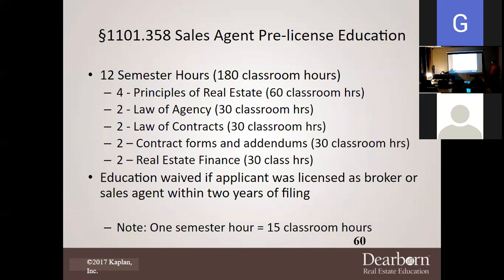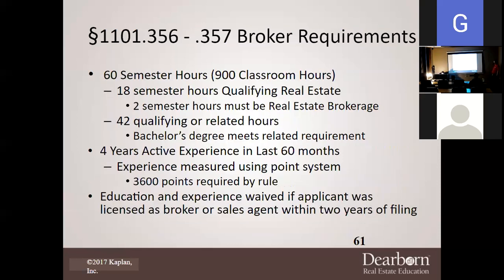These are the required courses you must take: a total of 180 hours. Those who have been with this program from day one have completed every one except the very first one — which we're currently in. There are 60 classroom hours per course, which is why it's broken into two classes. Note that one semester hour equals 15 classroom hours — so if you took three hours at a college, that's 45 classroom hours. The education requirement is waived if the applicant has been licensed as a broker or sales agent within the last two years of filing.